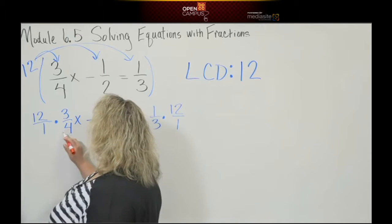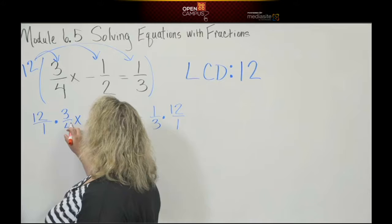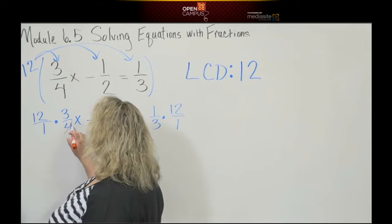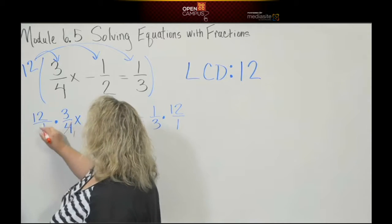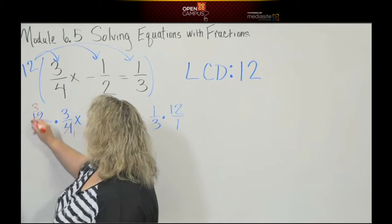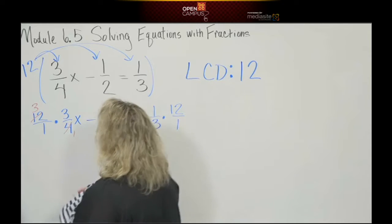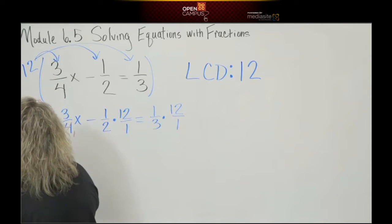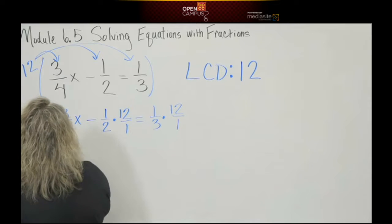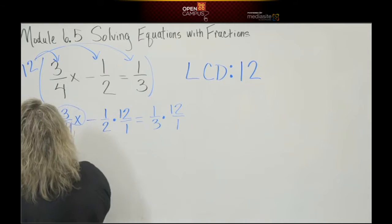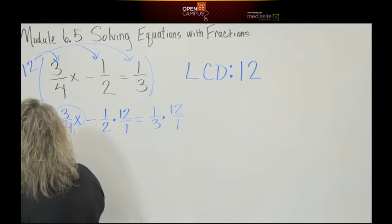So the next thing I'm going to do is reduce this. When I reduce this, four divides into four once, four divides into twelve three times. So that gives me a three multiplied to three x. So that's three times three x.